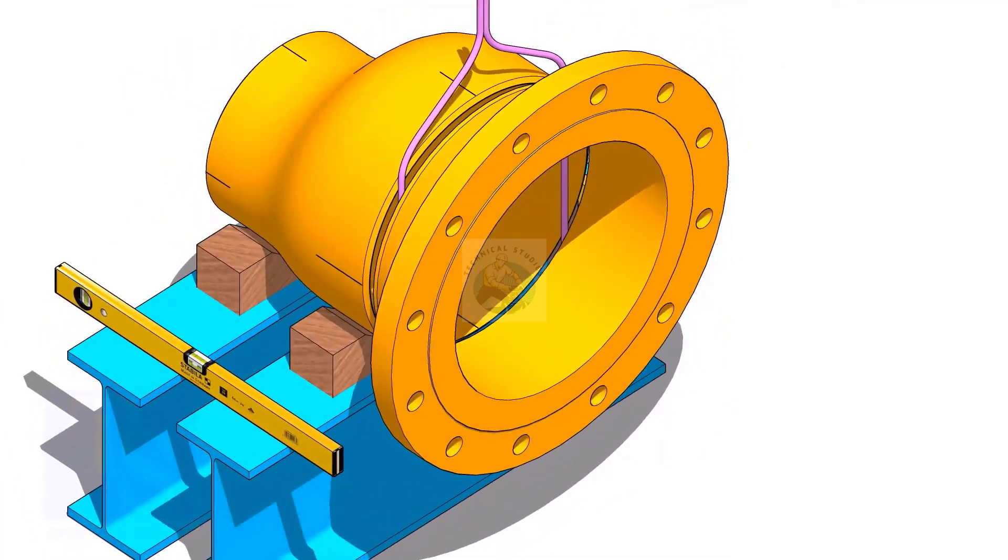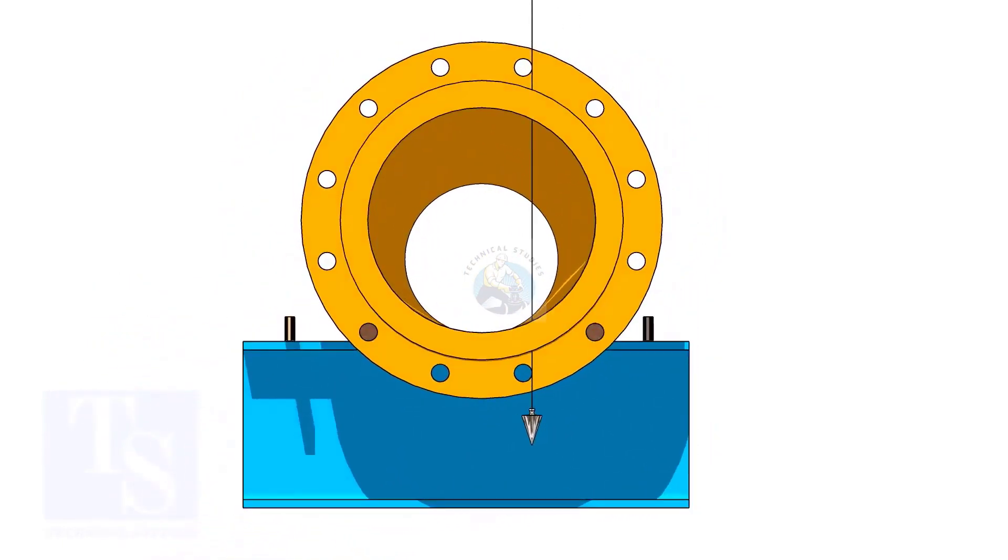Put the flange in the gap rod. Arrange proper supports below the flange. Plumb the flange through the holes as shown.